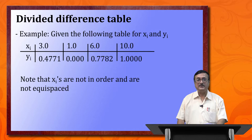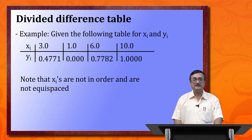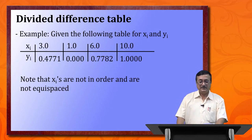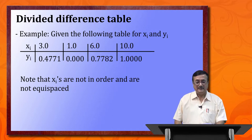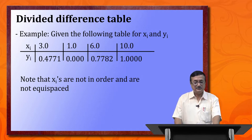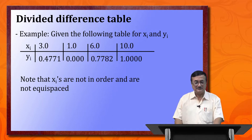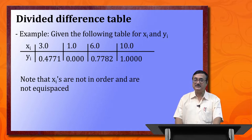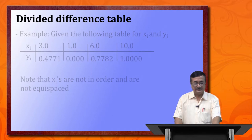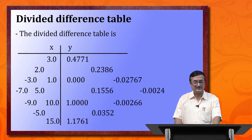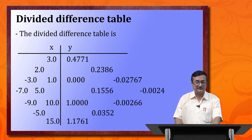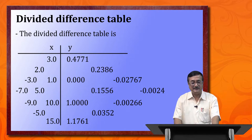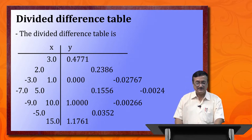Consider the following problem: we are given the table with xi values 3, 1, 6.0, 10.0, 15.0. Observe that the xi's are not in order — this is allowed in the case of divided differences and also in Lagrange's formula. Using the abbreviation DD for divided difference, we form the divided difference table and find y at x equals 6.9.